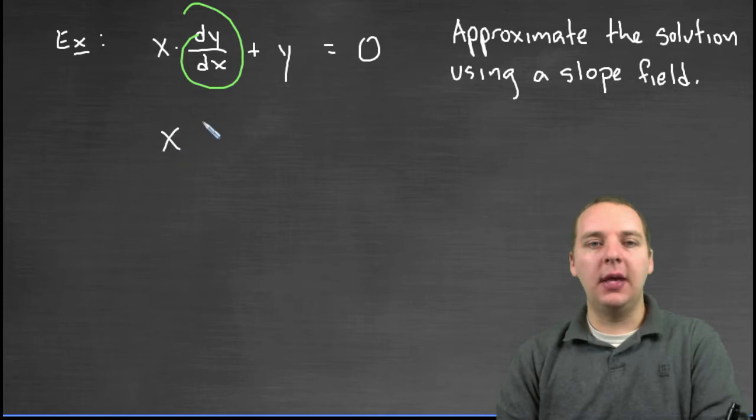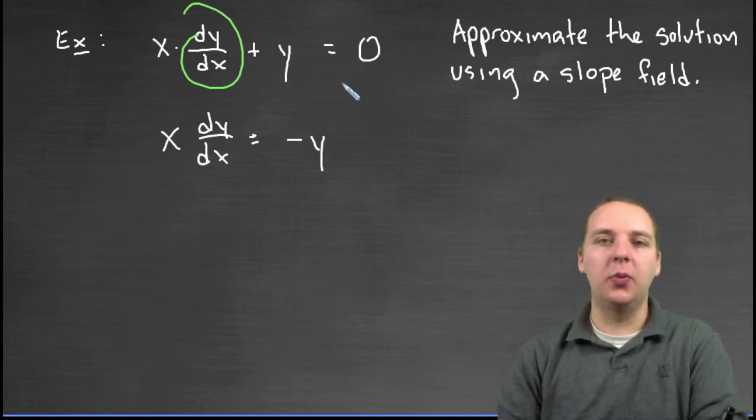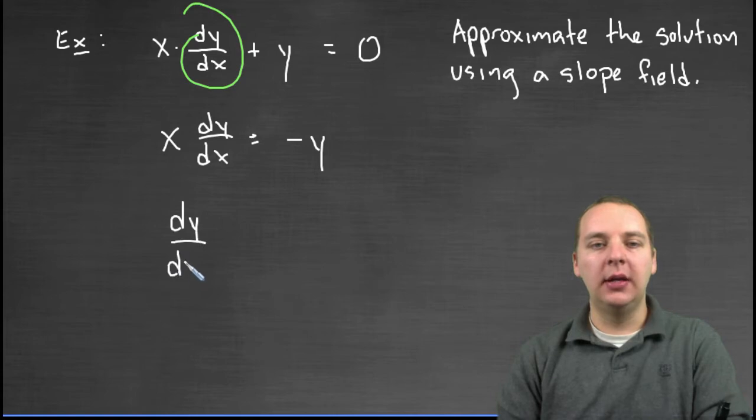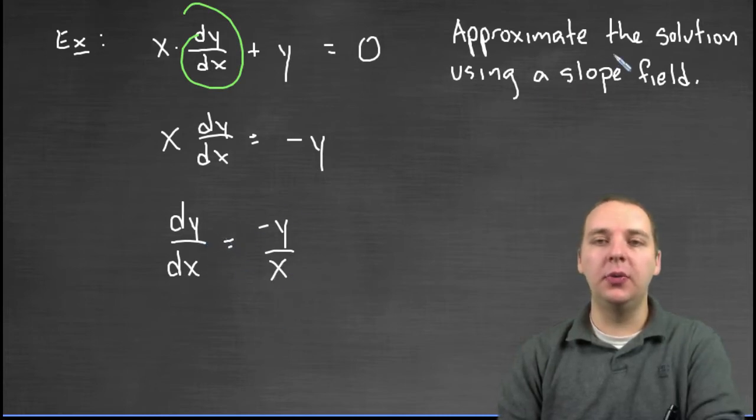So we'll have x·dy/dx equals negative y if you subtract the y to the right. Then we'll divide both sides by x, and we'll get dy/dx equals negative y over x. So that's step one, always step one if you want a slope field, is to isolate dy/dx.